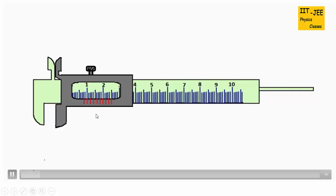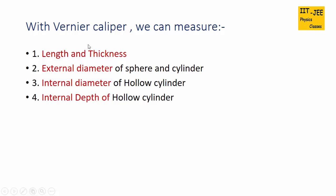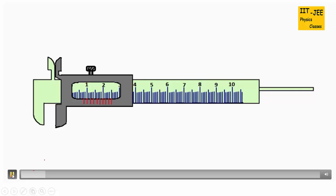Vernier scale can slide over the main scale. That's why this device is also called sliding caliper. With vernier caliper we can measure length and thickness of any object, external diameter of sphere and cylinder, internal diameter of hollow cylinder, and also internal depth of hollow cylinder.